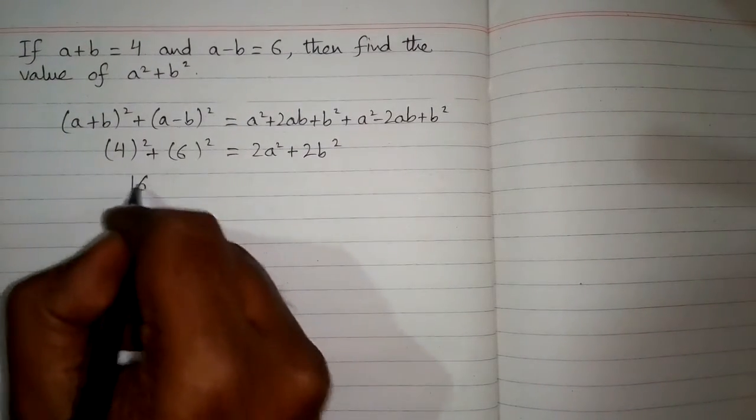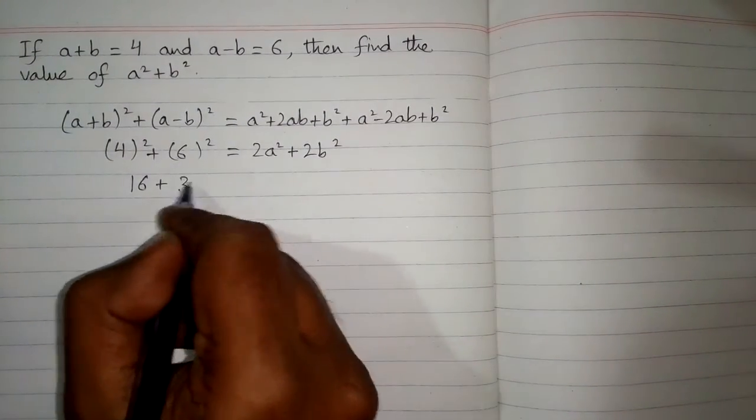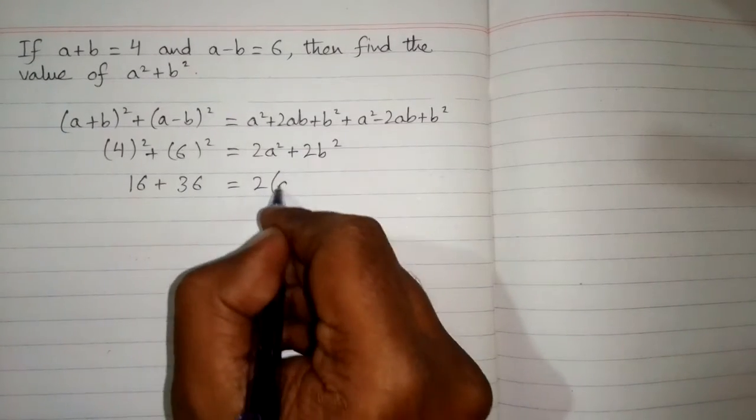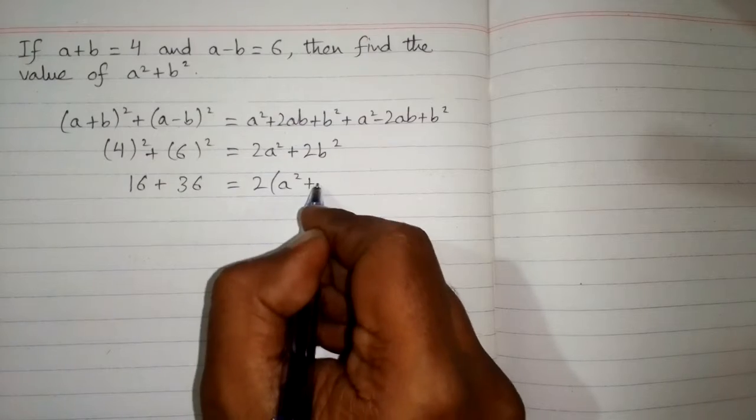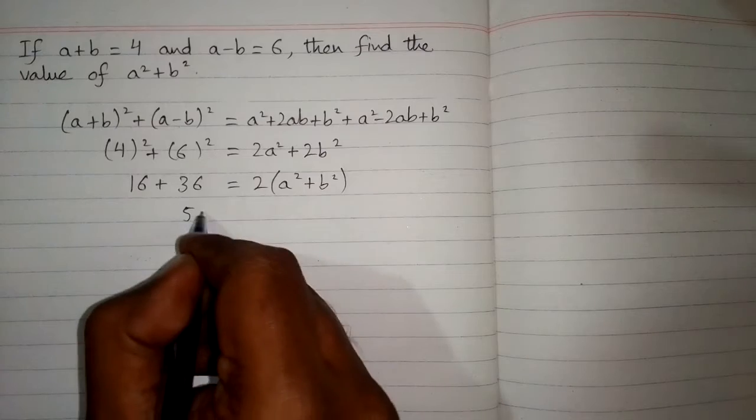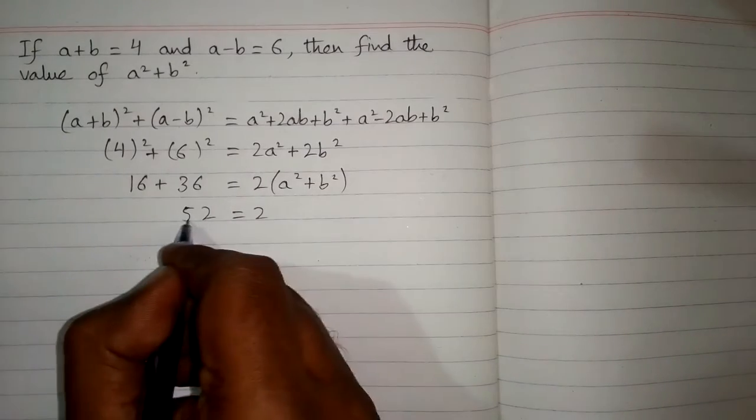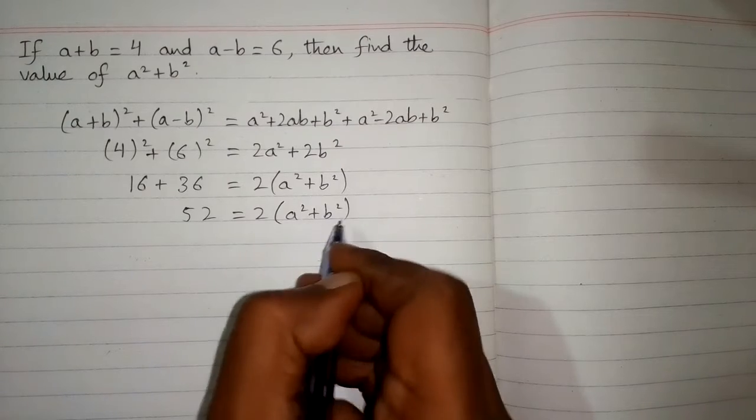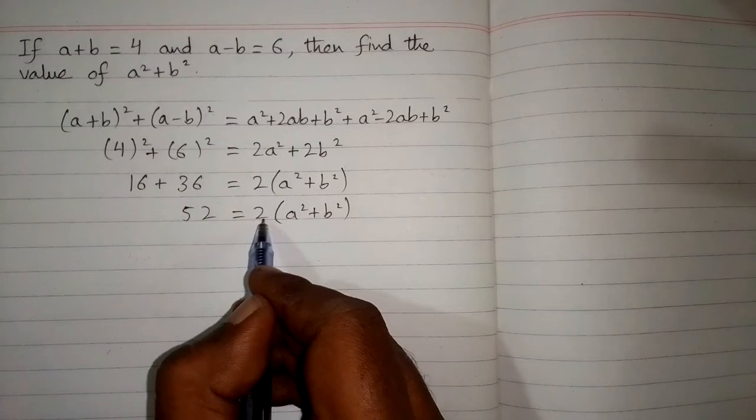Now square of 4 is 16 and square of 6 is 36 and on this side of equation we can take 2 common so we have 2 times a square plus b square. Now 16 plus 36 is 52 so we have 52 is equal to 2 times a square plus b square.